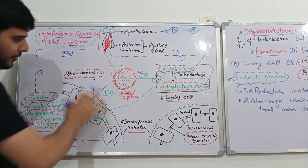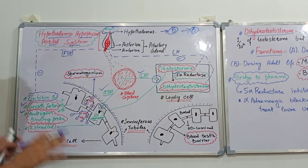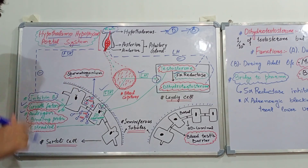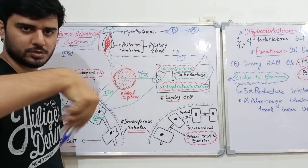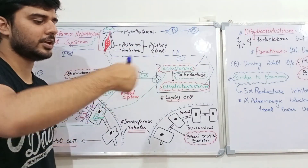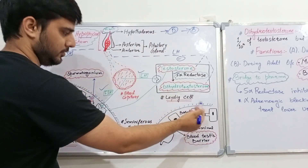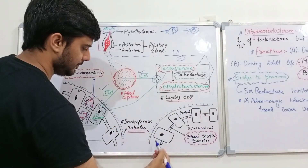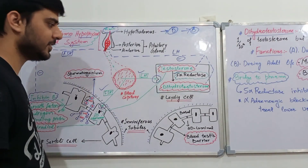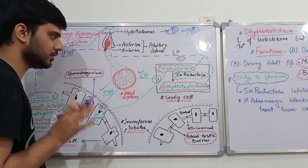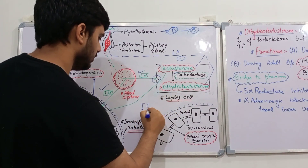Now I have made the structure of the testes — we should understand this before proceeding further. Within the histology of the testes, there are various tubules known as seminiferous tubules. Between the seminiferous tubules there is a space known as the interstitial space.